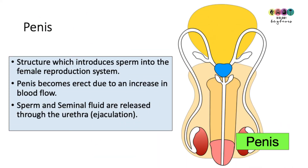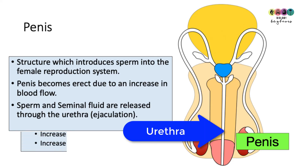The penis introduces sperm into the female reproductive system. It becomes erect due to an increase in blood flow, and it's through the urethra that sperm and seminal fluid flow when they are released.